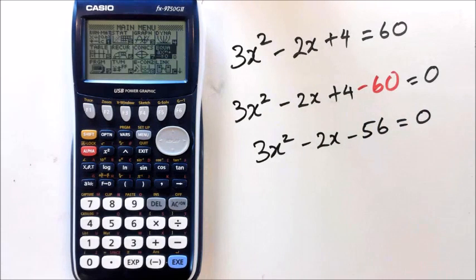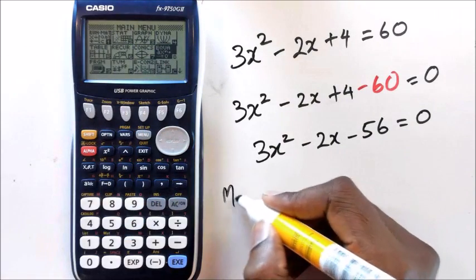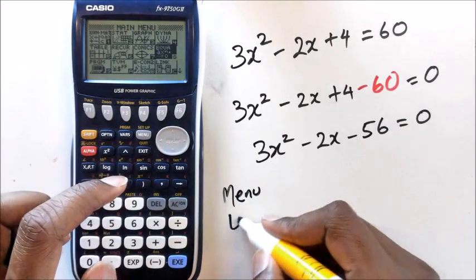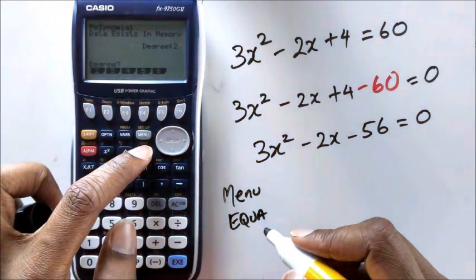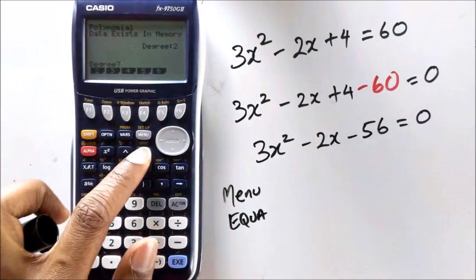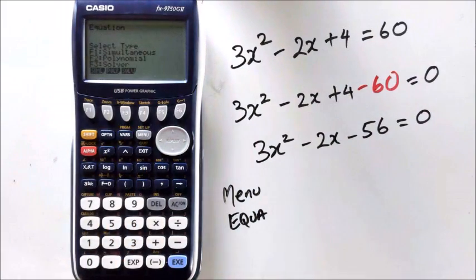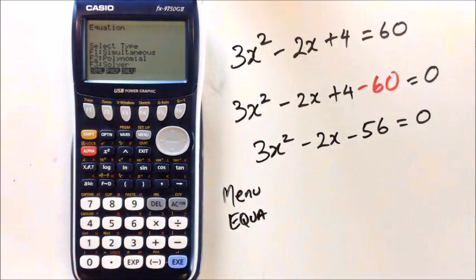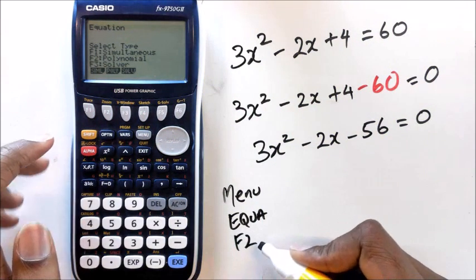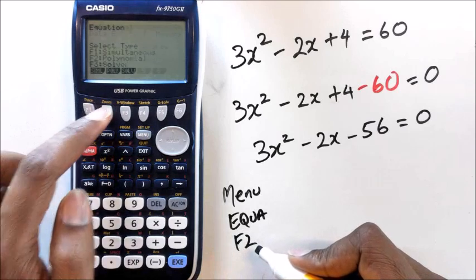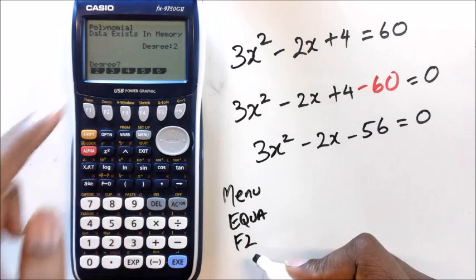So what you want to be doing is, you want to click on menu and go into equation. When you go into equation, what's going to happen is, you are going to end up with this menu here. And here, it's going to ask you for degree.